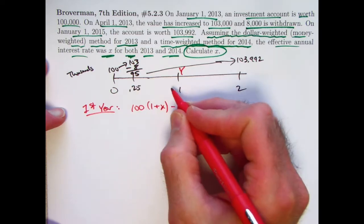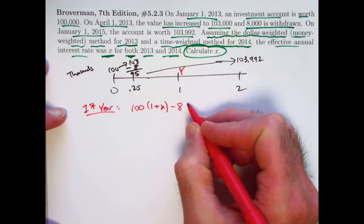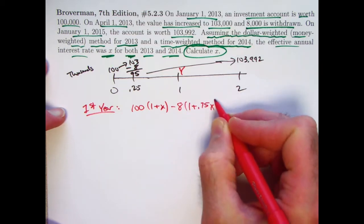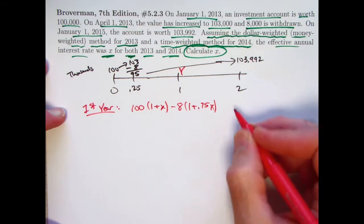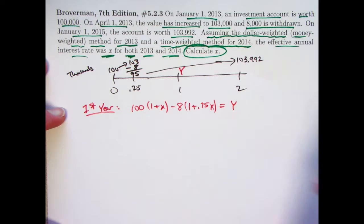Then we have the withdrawal of eight, or minus eight, that's in the account for 0.75 amount of time. So it gets multiplied by one plus 0.75x, again, since we are thinking about simple interest. And this has to be the accumulated balance at time one, which we're calling Y. So there's our first equation.